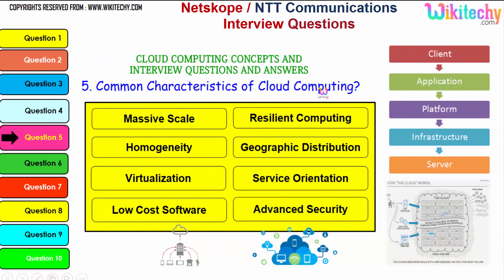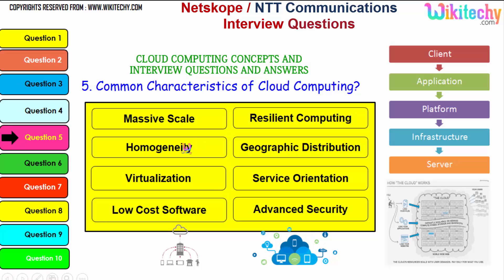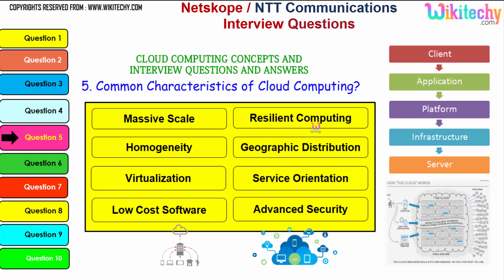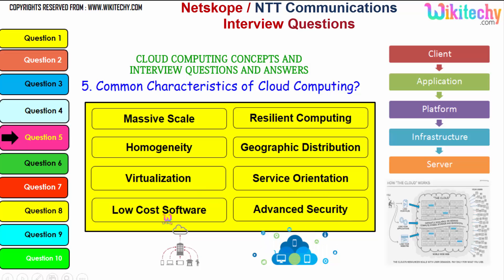Let's talk about the common characteristics of cloud computing. These are very important characteristics: massive scale — how much you want, they can give it to you; homogeneity; virtualization — you can create a VM machine and use it; low-cost software, which becomes really cheap; resilient computing, so whatever processing is done it's done remotely without disturbances; geographic distribution — the data and computing process is geographically distributed; service orientation — it's based purely on service orientation; and advanced security.